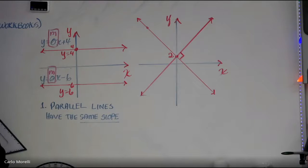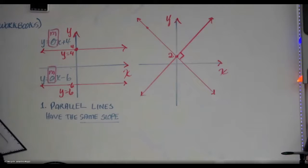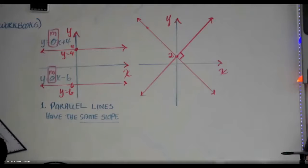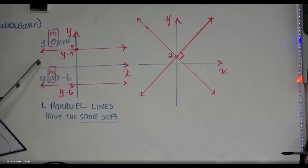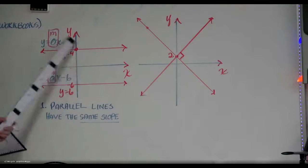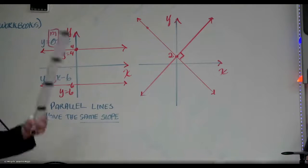They'll give you two equations and say, will these following two lines ever cross? You determine if the slopes are the same. If those slopes are the same, they will never cross. Will these lines ever cross? No, because they are parallel, and parallel lines have the same slope, and same slope means they never cross.